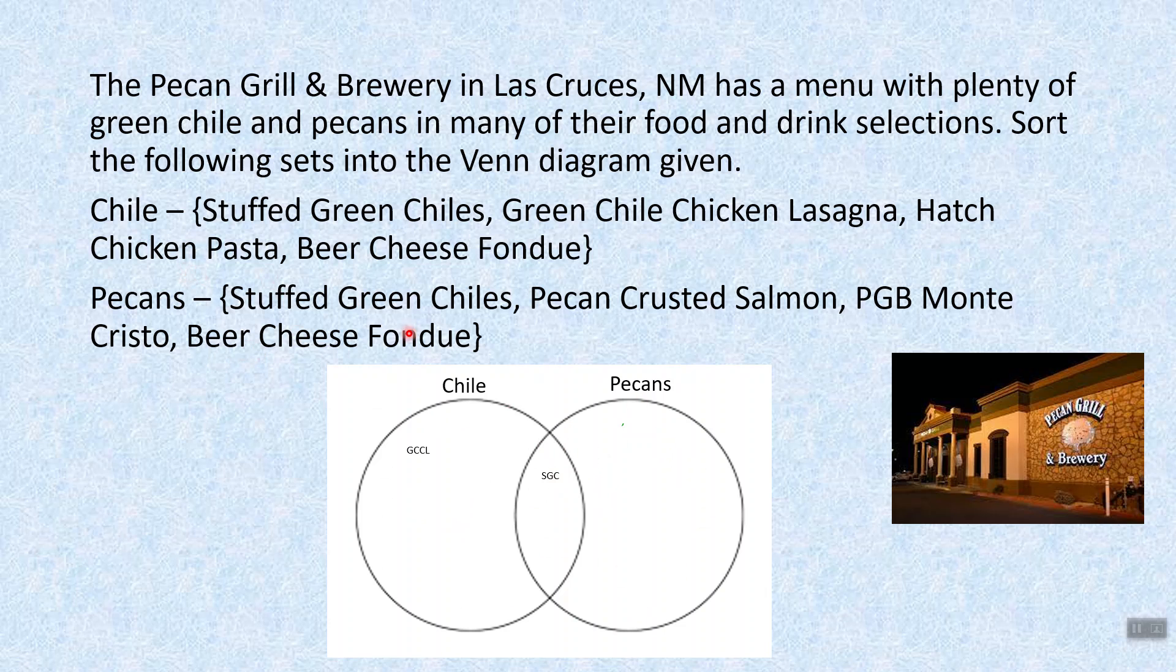Hatch chicken pasta is not in the pecan circle. And beer cheese fondue happens to have both chili and pecans, so it'll be in the overlap.